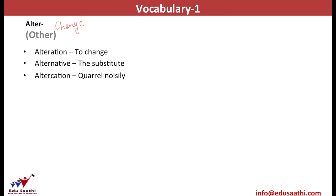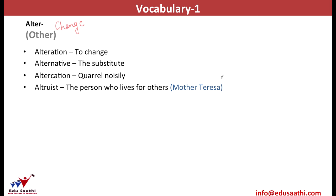Any word which ends in -ist becomes an adjective. Thus, altruist is any person who lives for others. This is made of two roots: alter, which means other, and -ist, which makes it an adjective. A person who has devoted his life for the benefit of others is an altruist — for example, Mother Teresa or Nelson Mandela.